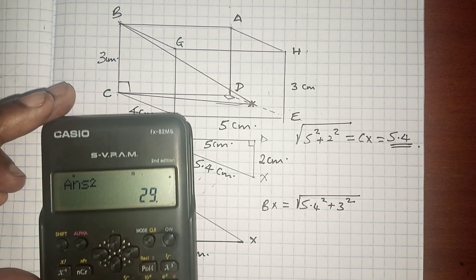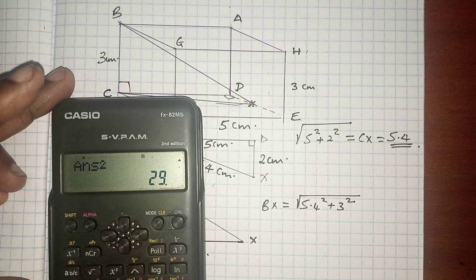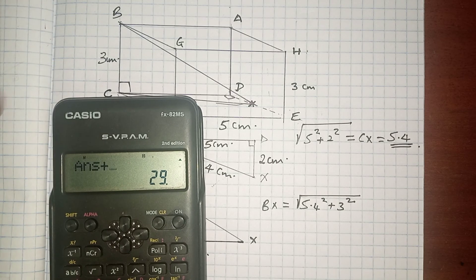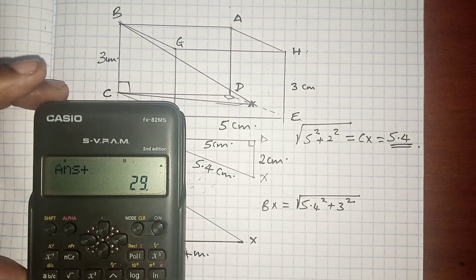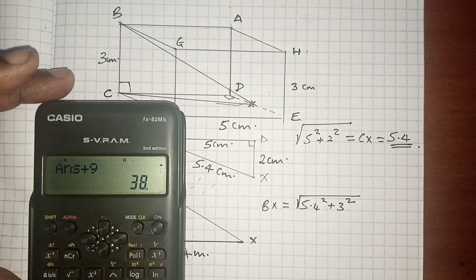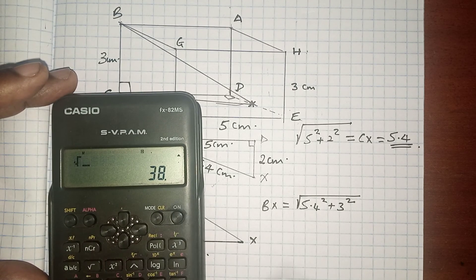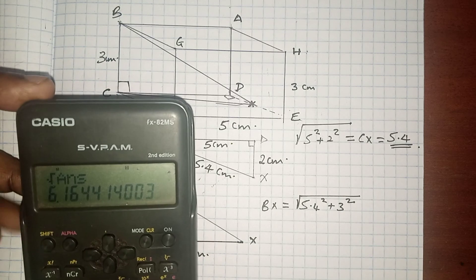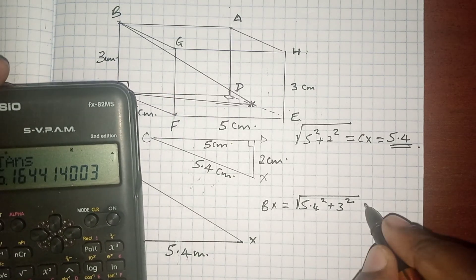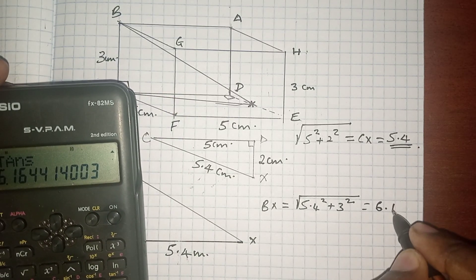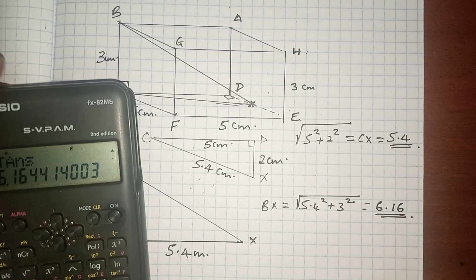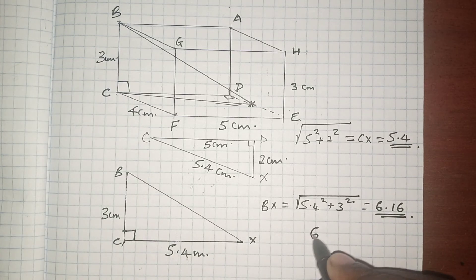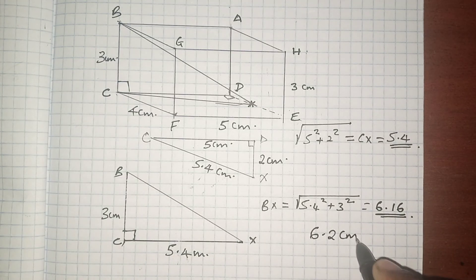So 29 plus the square of 3, which is 9. You're going to get 38, and the root of that is 6.16. So this is 6.16, or to 1 decimal place, this is 6.2 cm.